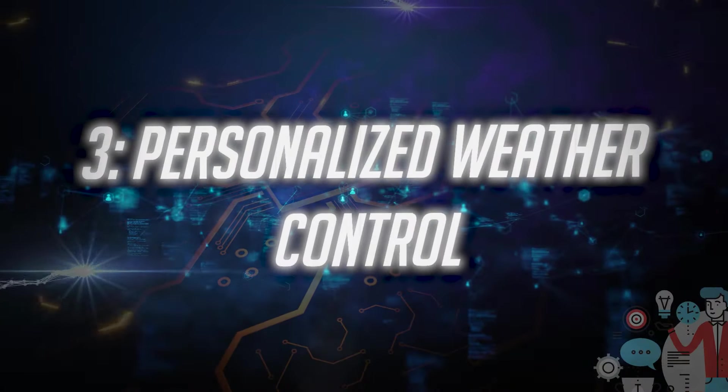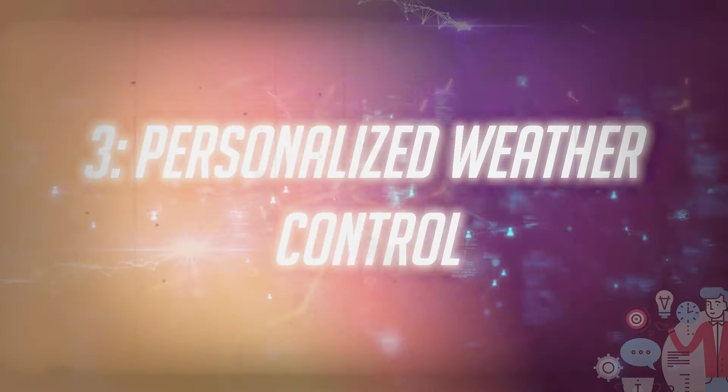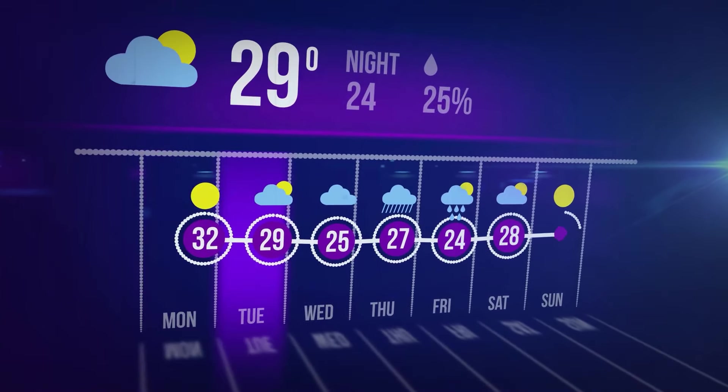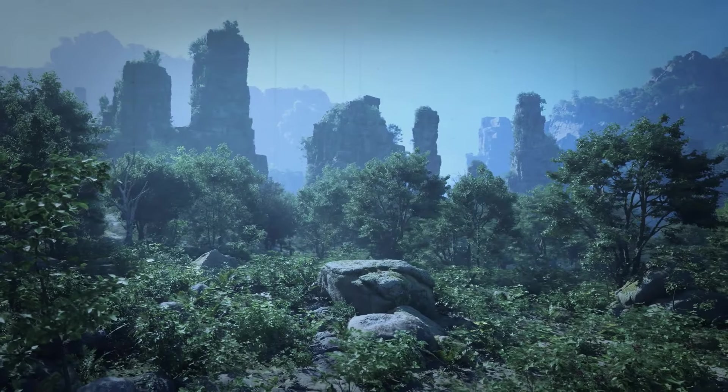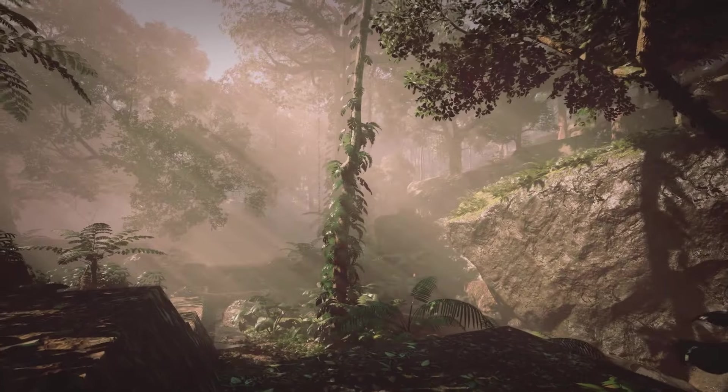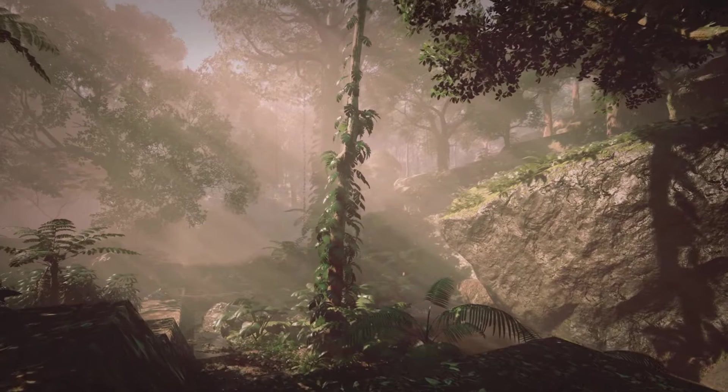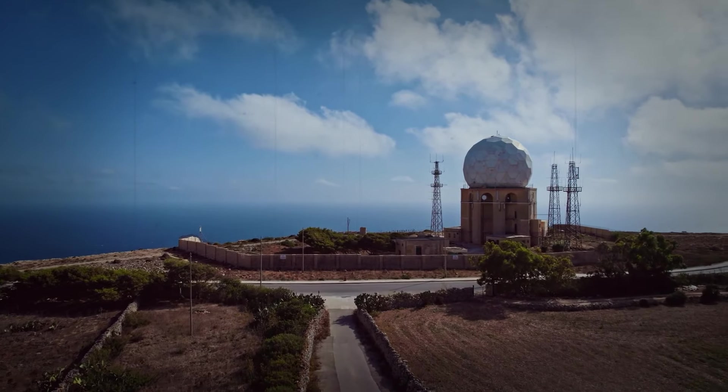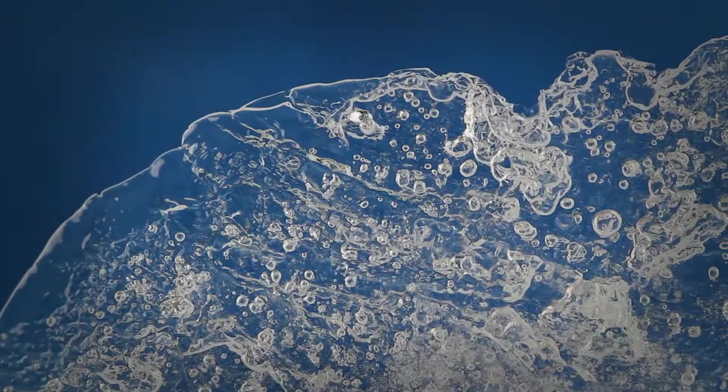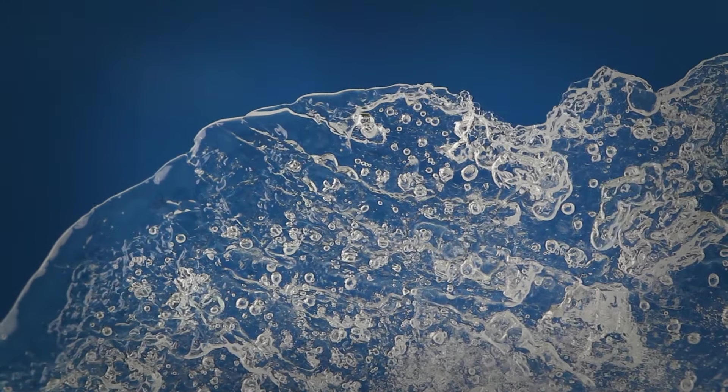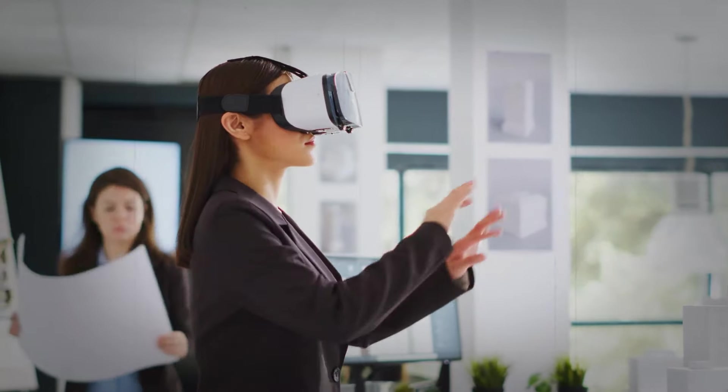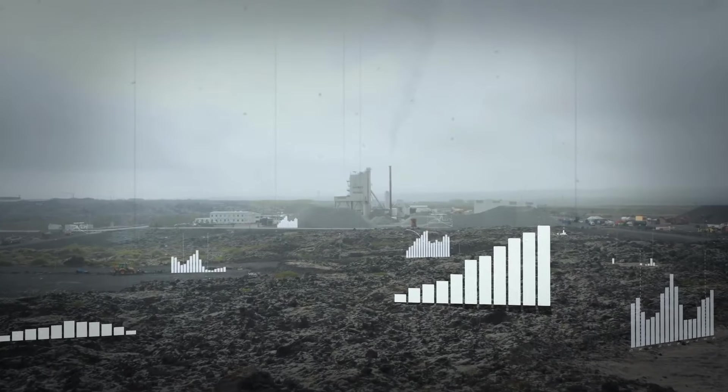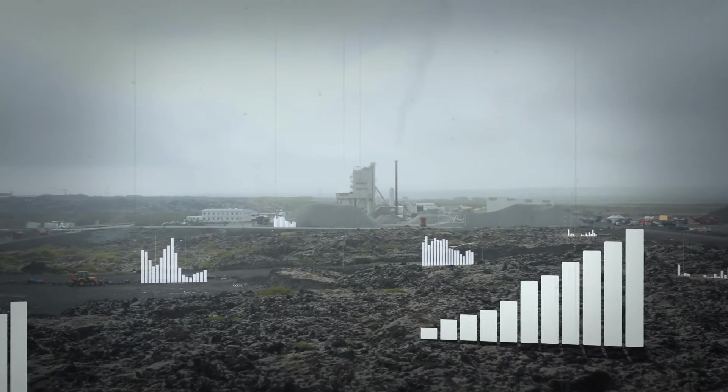Number three, personalized weather control. Among the intriguing possibilities of AI is the idea of personalizing the weather. What would you do if you could finally customize your immediate environment, tailoring the weather to suit your preferences? With sophisticated AI algorithms analyzing vast amounts of meteorological data, predicting and influencing weather patterns becomes a reality. This newfound capability extends beyond mere convenience. It provides a tangible solution to mitigate the impact of extreme weather events.